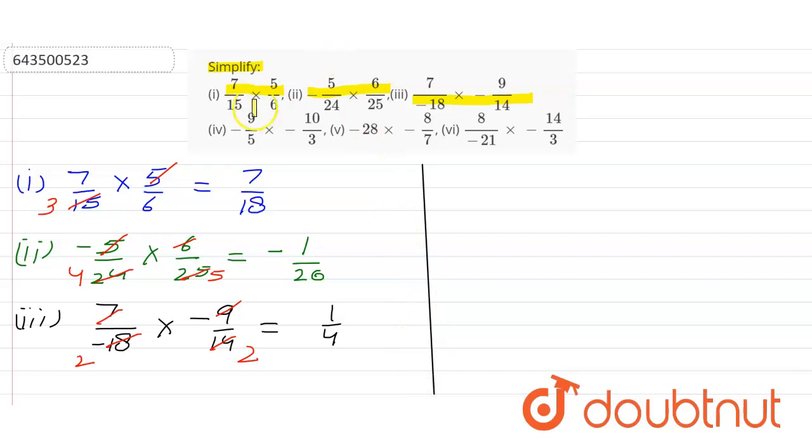Now it's time to consider the fourth part. Minus 9 by 5 multiply with minus 10 by 3. Again we could cancel: 5 twos are 10 and 3 threes are 9.